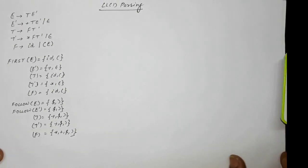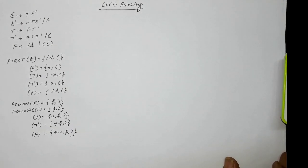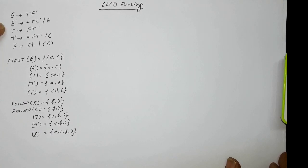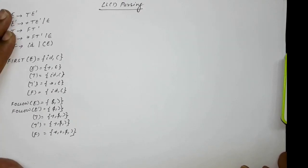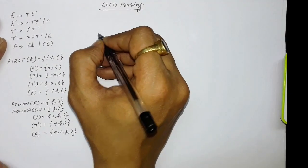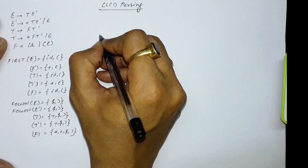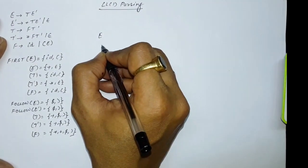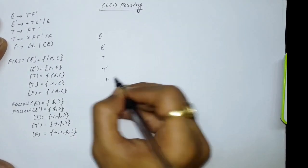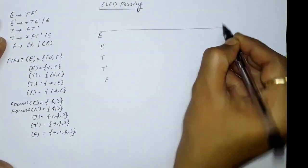In the continuation of LL(1) parsing, let us take one more example. This is the grammar for which we have already computed the first and follow sets in the previous lectures. Having computed the first and follow for the various symbols, let us draw the parsing table. For drawing the parsing table, you need to write the non-terminal symbols on the row side and terminal symbols on the column side.